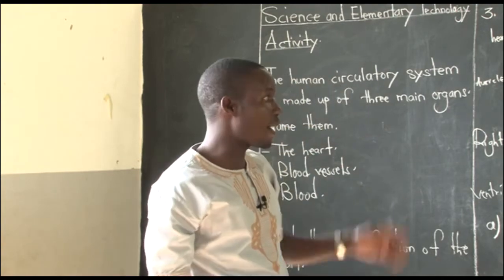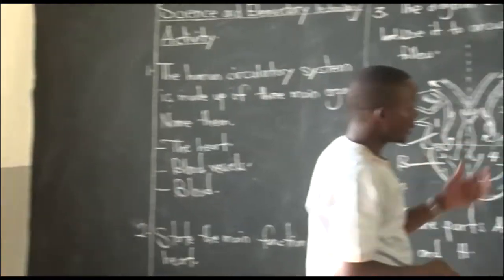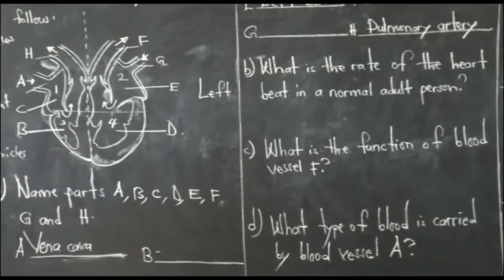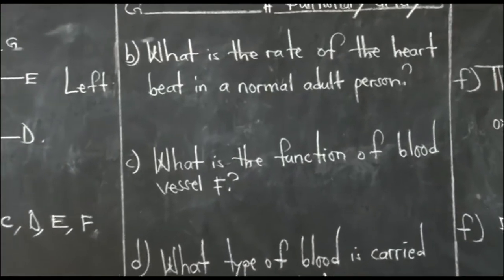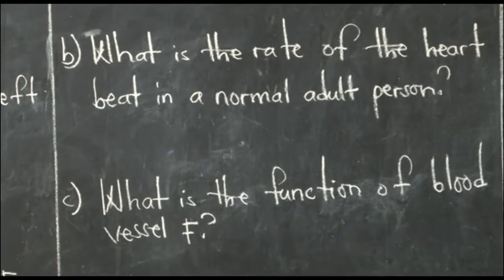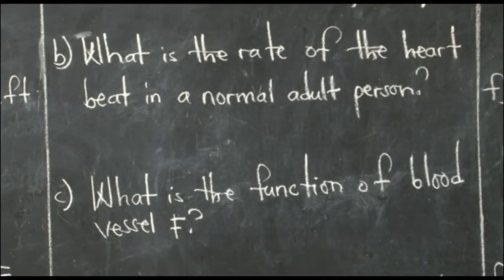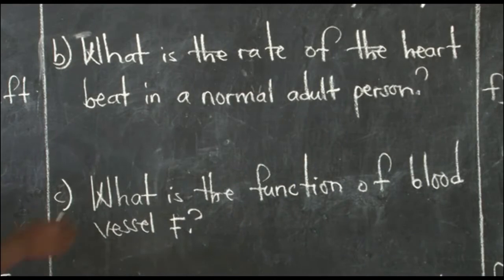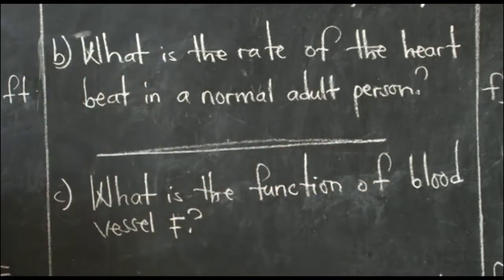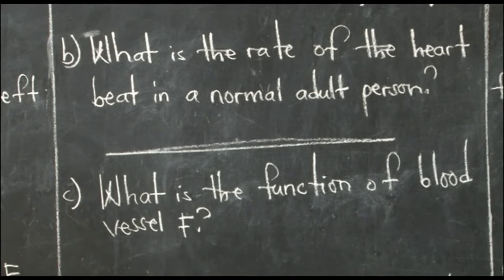Part B of the question asks: what is the rate of the heartbeat in a normal adult person? Within a minute, how many times does the heart beat? We discussed this — please answer this question, then we push to the next number.